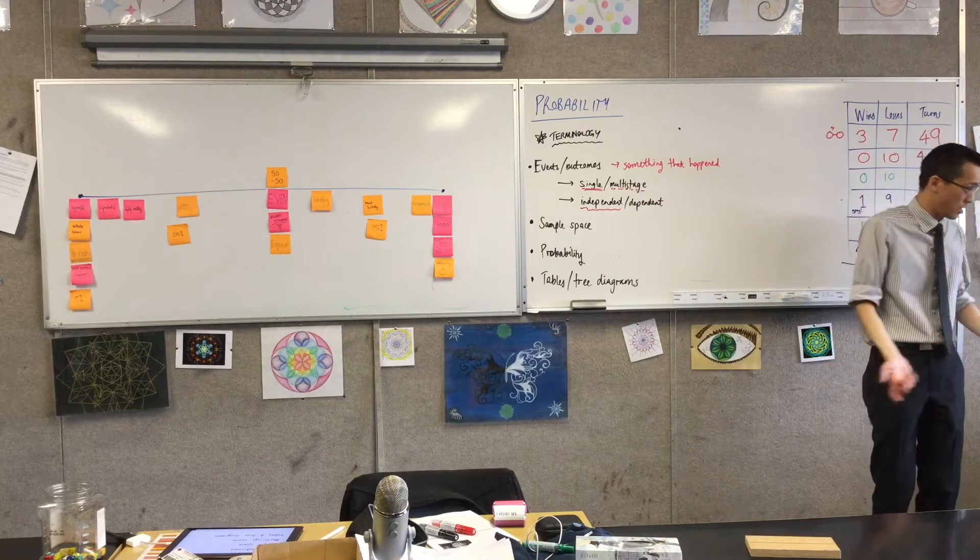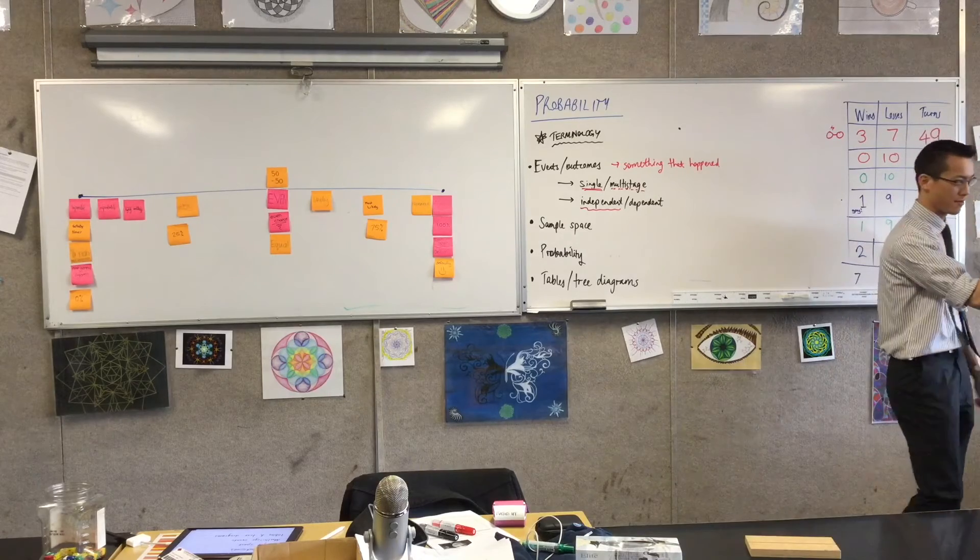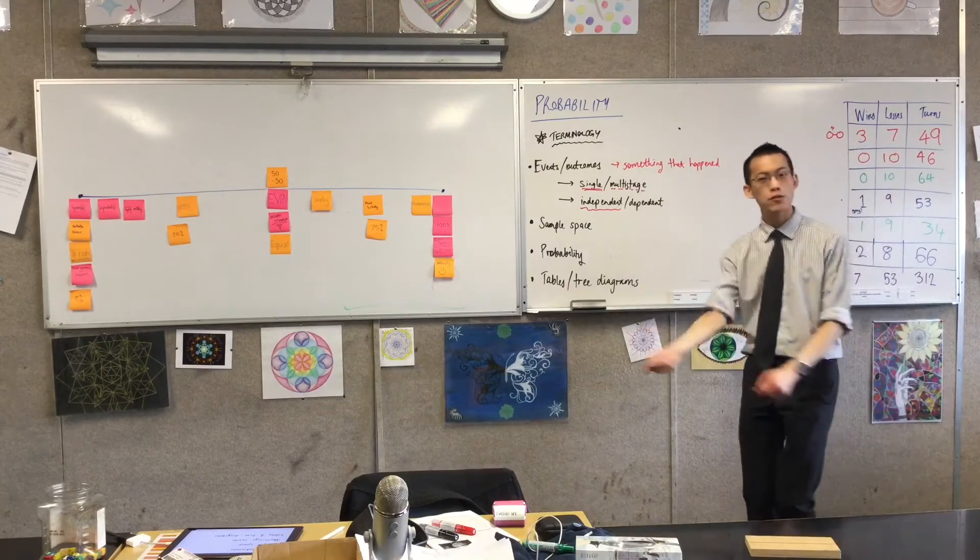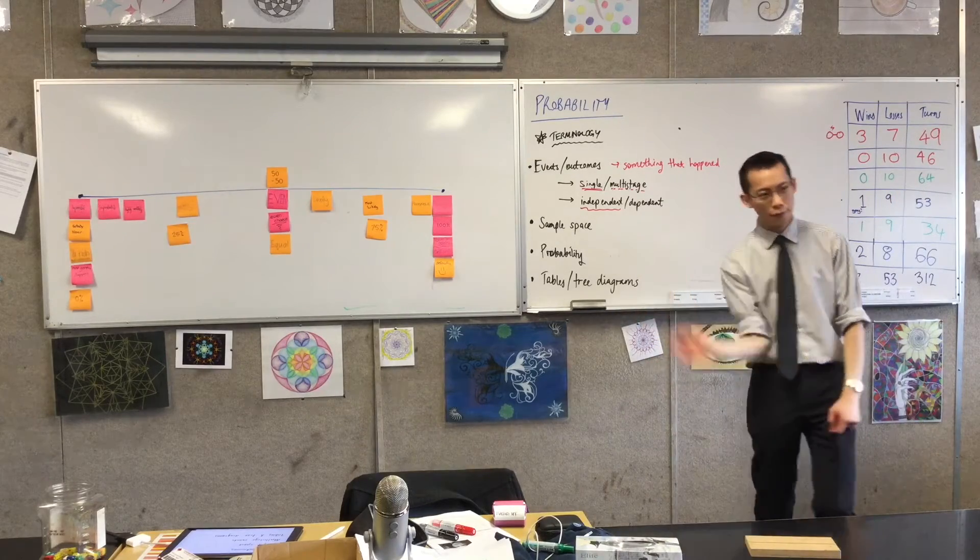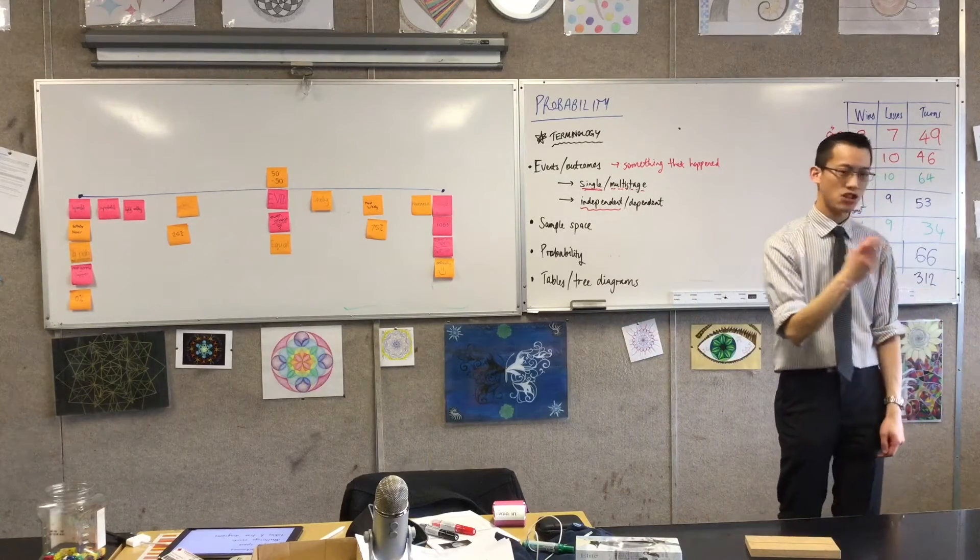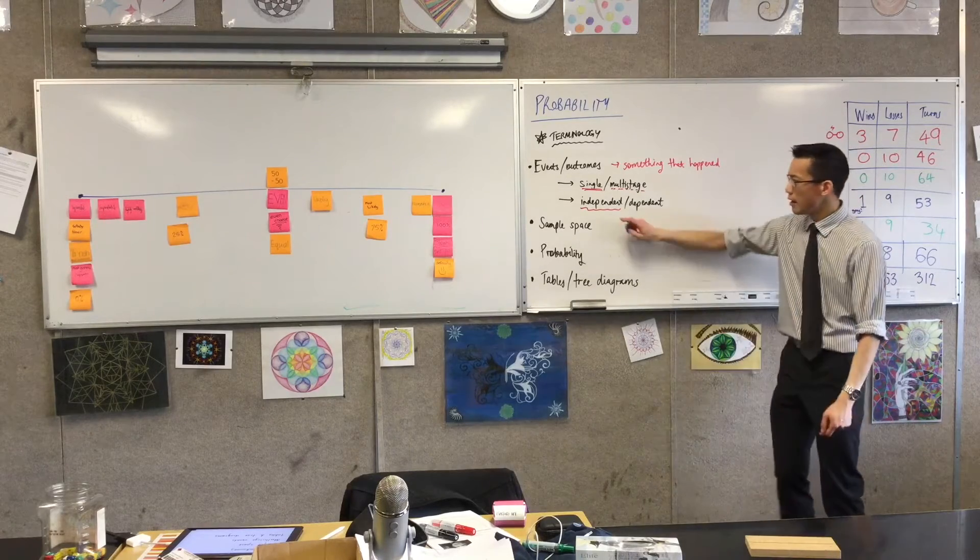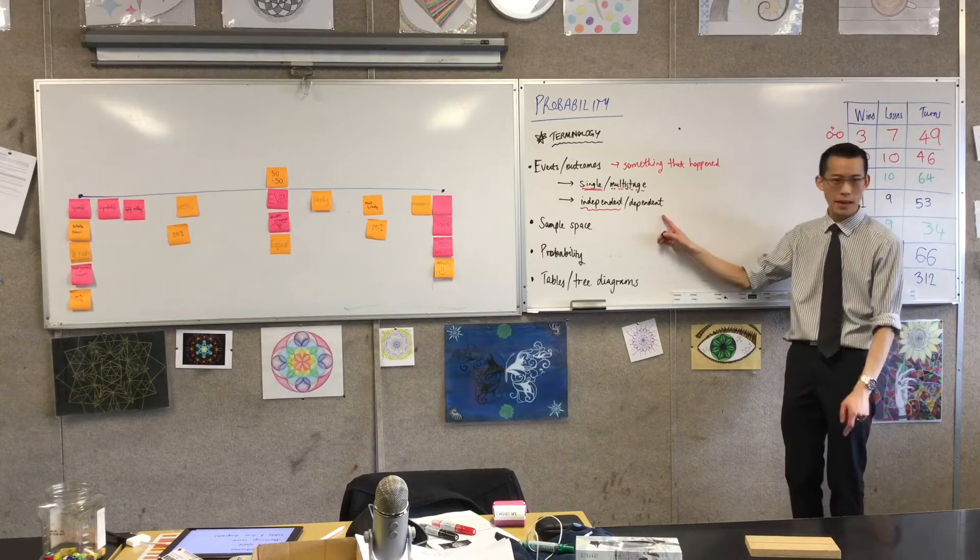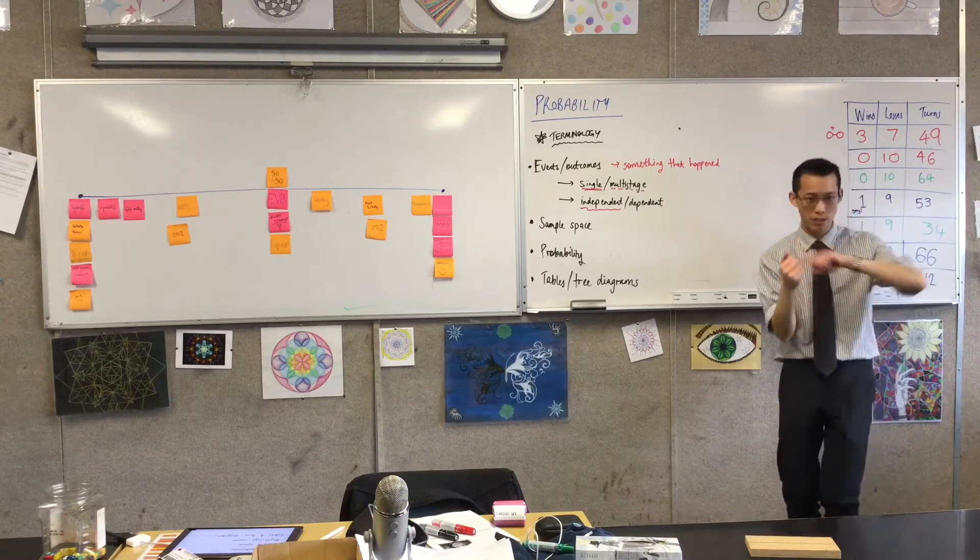Therefore, if I ask, for example, what's the probability of getting killed on any individual turn? What's the probability of rolling a six? Now every time you roll there's a chance of getting a six.